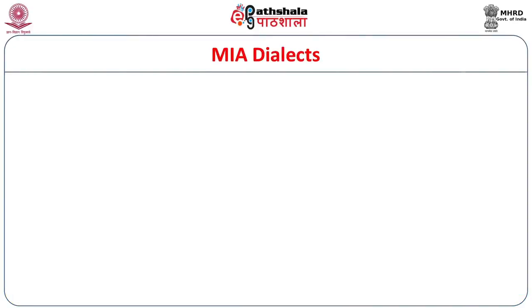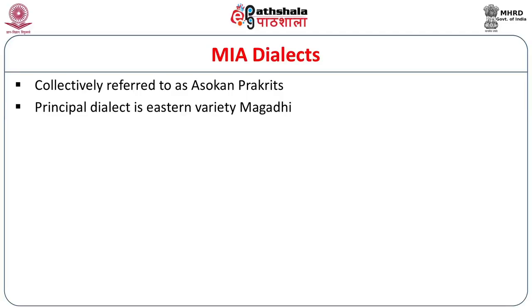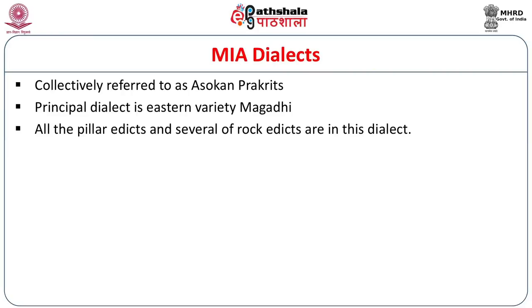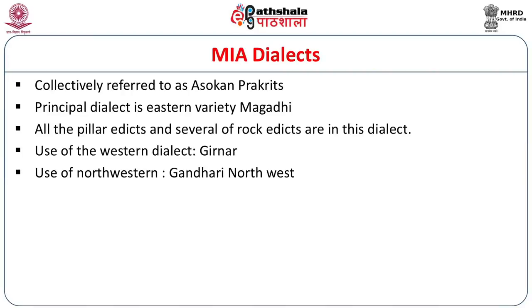The inscriptions were actually in MIA dialect — Middle Indo-Aryan dialect — collectively also known as Ashokan Prakrit. The principal dialect is the eastern variety of Magadhi, that is the Magadhan empire where the Mauryas were ruling. All the pillar edicts and several of the rock edicts are in this dialect. Use of the western dialect can be seen at Girnar, the northwestern Gandhari Prakrit in the northwest, and non-Indian languages like Greek and Aramaic in territories where people only understood those languages.